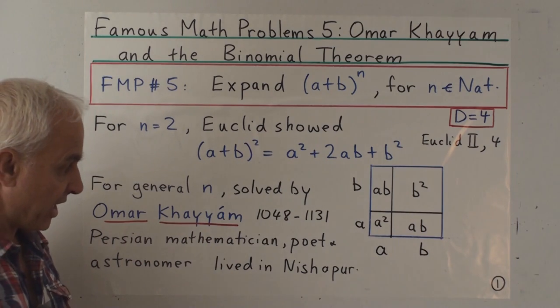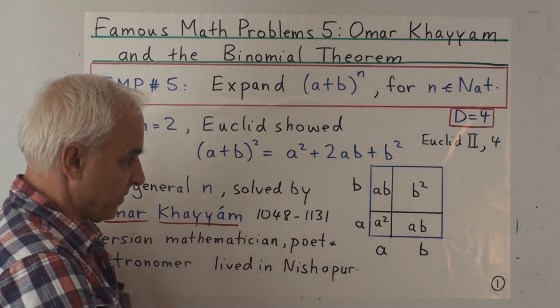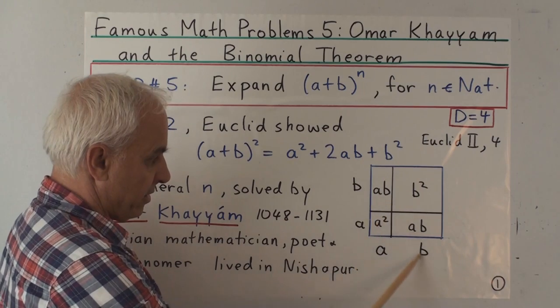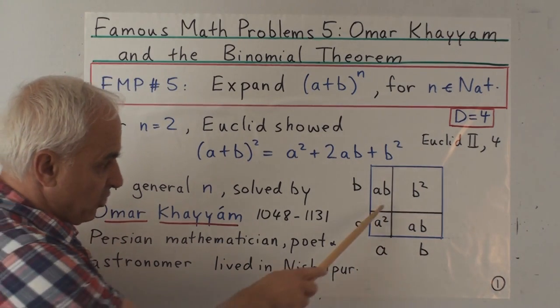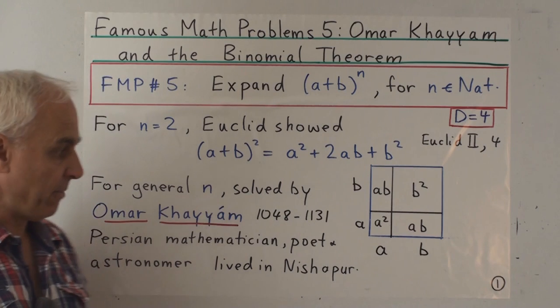can be divided into the area of this little square, which is a squared, and this square here, which is b squared, and these two rectangular areas, which both have area a times b.